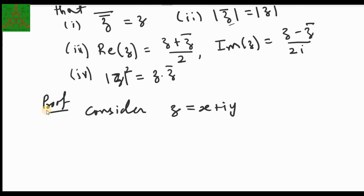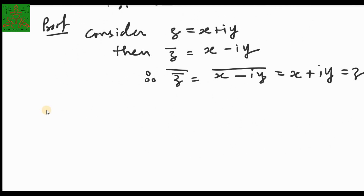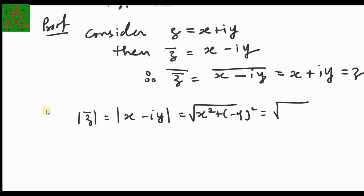For the proofs: consider z = x + iy, so z̄ = x − iy. Then z̄̄ = (x − iy)̄ = x + iy = z, proving property 1. For property 2, |z̄| = |x − iy| = √(x² + (−y)²) = √(x² + y²) = |z|. So the modulus of the conjugate equals the modulus.